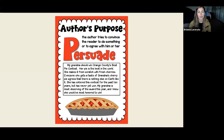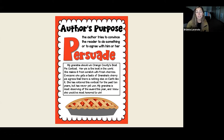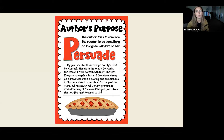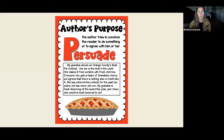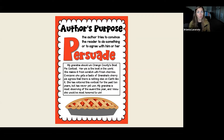They're trying to convince us the pie is the best because it's made from scratch with fresh cherries. It says, 'She has entered the contest for the past 10 years and has never yet won. My grandma is most deserving of the award this year and I know she would be most honored to win.' We can see the different persuasive techniques used — she's been in this competition for 10 years and they're trying to persuade us to vote for her.